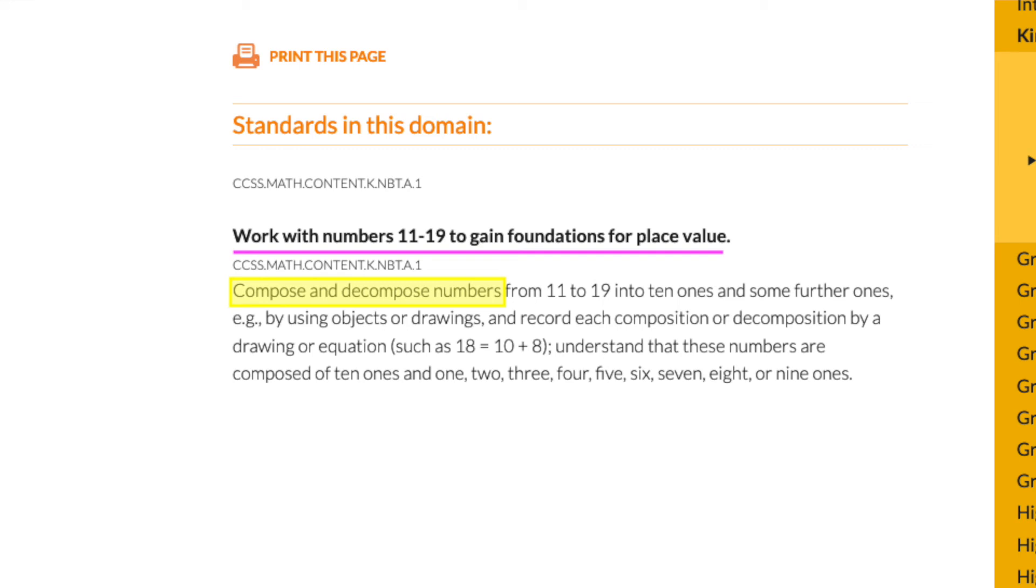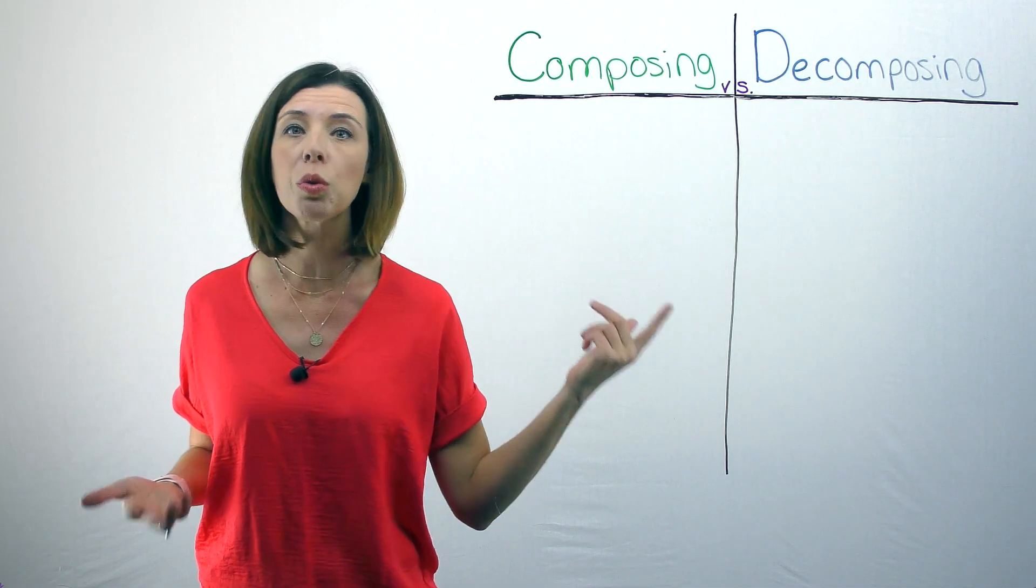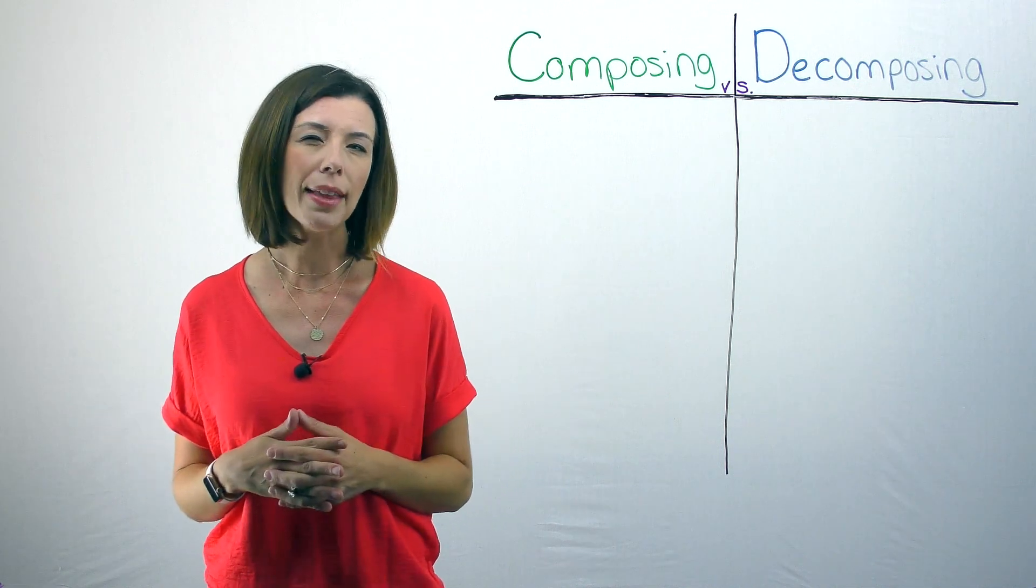Understand that these numbers are composed of ten ones and one, two, three, four, five, six, seven, eight, or nine ones. So let's first reflect on where have we heard the words compose or decompose before? Take a minute just to think about that.